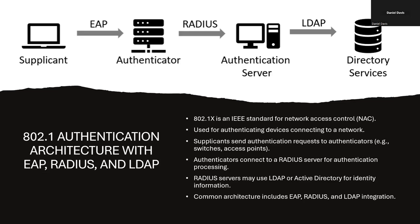802.1X is the IEEE standard for network access control (NAC). We use this for authenticating devices connecting to a network — specifically for physically connecting to a network. The process looks something like this: a device wanting to connect to the network is checked by an authenticator that verifies its identity using something like RADIUS, which in turn checks against an authentication server. The authentication server may use something like LDAP or Active Directory to verify the identity information.